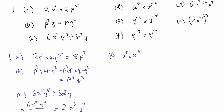Part D: x to the power of 8 times x to the minus 6 — we add the indices — 8 plus minus 6 is 2, so that's x squared. Part E: y to the minus 2 times y to the minus 4 — adding the indices — minus 2 plus minus 4 is y to the power of minus 6, which can be written as 1 over y to the 6.